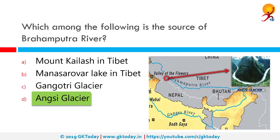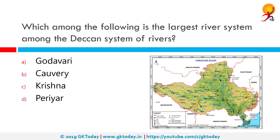Which among the following is the largest river system among the Deccan system of rivers? The correct answer is the Godavari, with a length of 1,465 kilometers. It is India's second largest river and the longest river in South India. It originates near Trimbak in the Nashik district of Maharashtra and flows east across the Deccan Plateau into the Bay of Bengal near Narasimhapuram in West Godavari district of Andhra Pradesh. The river is also known as Dakshin Ganga and Gautami; the Manjra and Indravati rivers are its major tributaries.